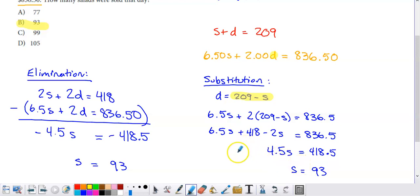Had the problem asked you to also find the number of drinks sold, you would, using either of these processes, once you get your answer for S, you'd have to plug that answer back into one of your original equations and then solve for the corresponding value of D.